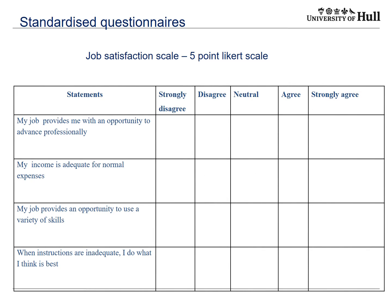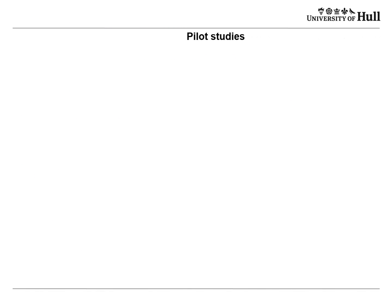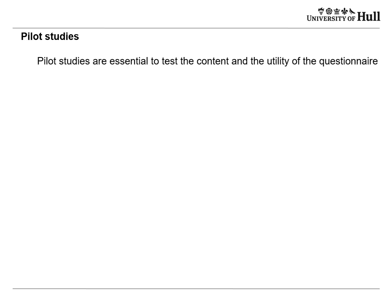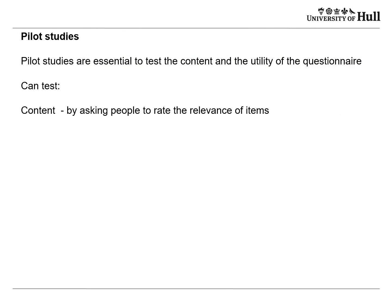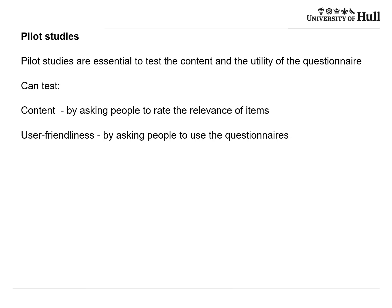Here's an example of a five-point Likert scale with a neutral point in the middle: strongly disagree, disagree, neutral/don't know, agree, strongly agree. Pilot studies are essential — you have to test the content and utility of the questionnaire. You have to dip your toe in the water before you plunge in completely and waste resources. You can test content by asking people to rate the relevance of items, and test user-friendliness by asking people to use the questionnaires.